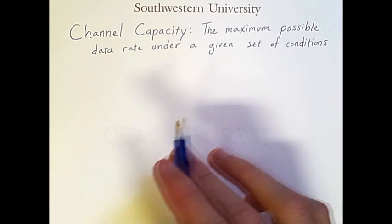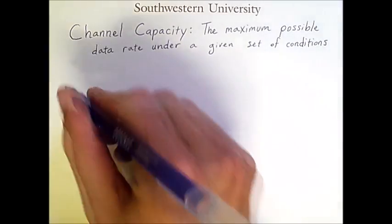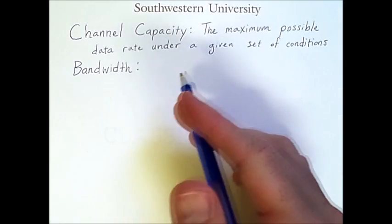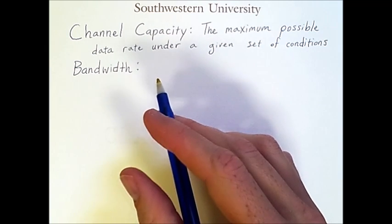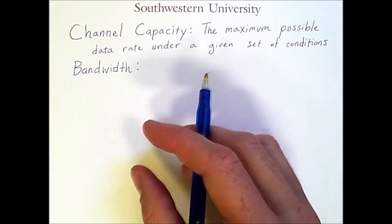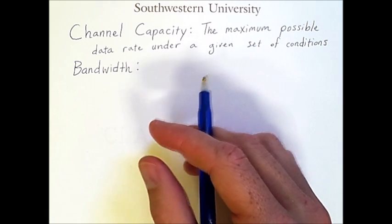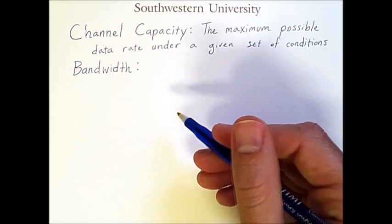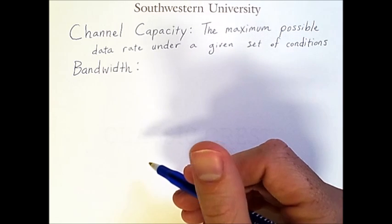Now, to understand this, we also have to understand another concept called bandwidth, which has some different definitions. Strictly speaking, the bandwidth is the range of frequencies in a given signal. So the highest frequency that is part of the signal minus the lowest frequency that is part of the signal.